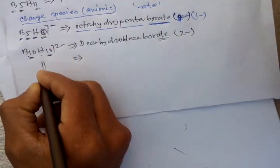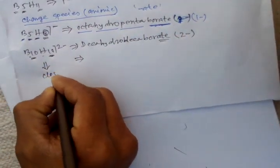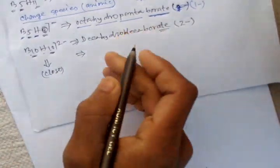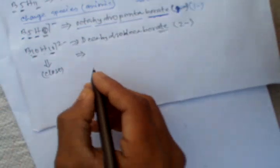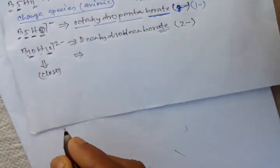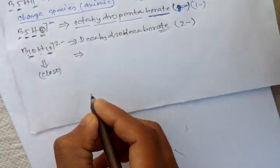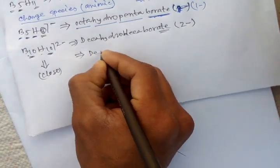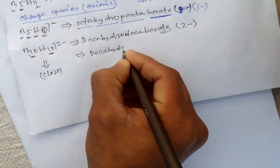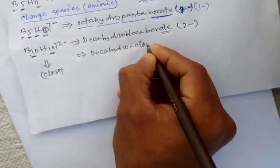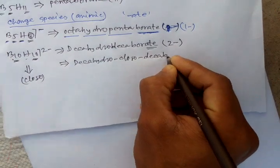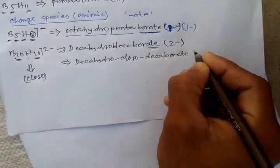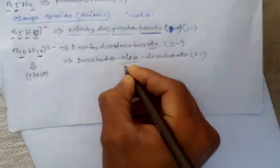Actually, this is a closed structure. So the nomenclature of this boron compound, you can write decahydro-closo-decaborate(2-). You can also write it this way.